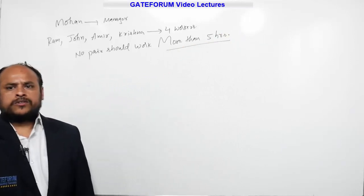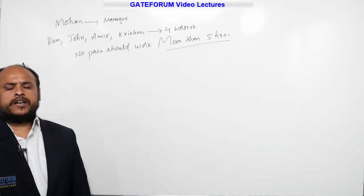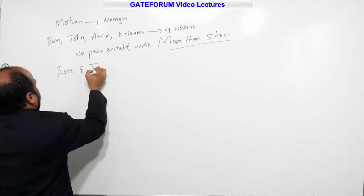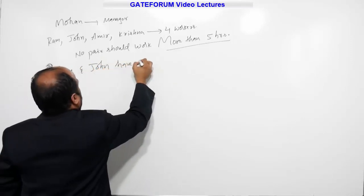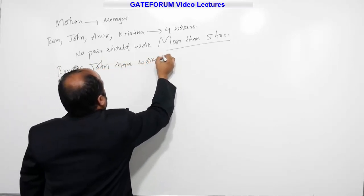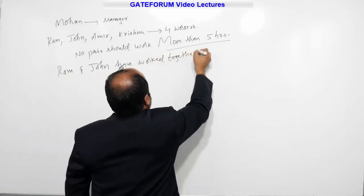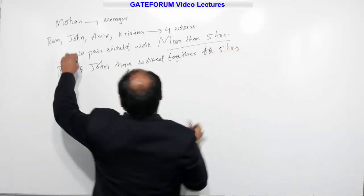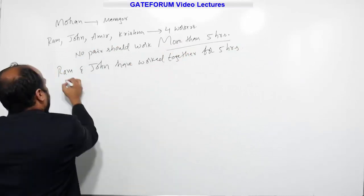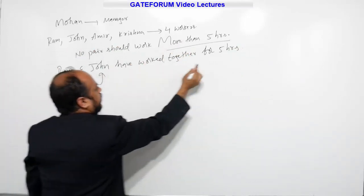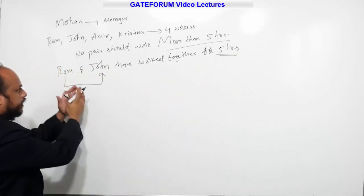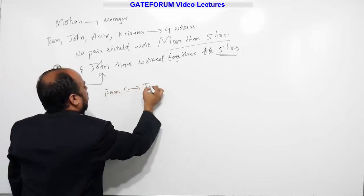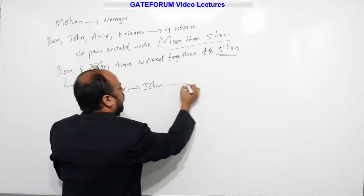Now, one more statement is given: Ram and John have worked together for five hours. Since no pair should work more than five hours, Ram and John have now reached the limit. After five hours, we need to rearrange these pairs. At present, Ram and John are one pair, and this pair has worked for five hours. So after five hours, I am arranging new pairs.